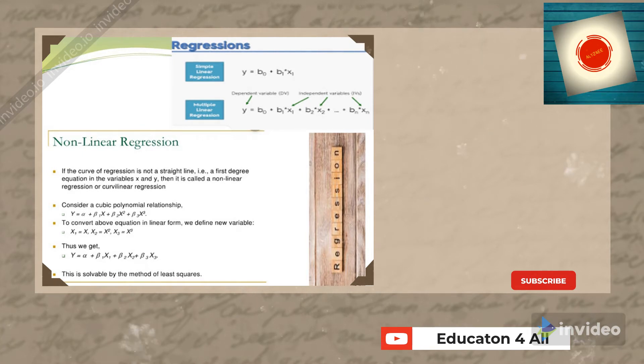The main point to note is that y is the dependent variable (DV), and the independent variables (IVs) are x1, x2, through xn.